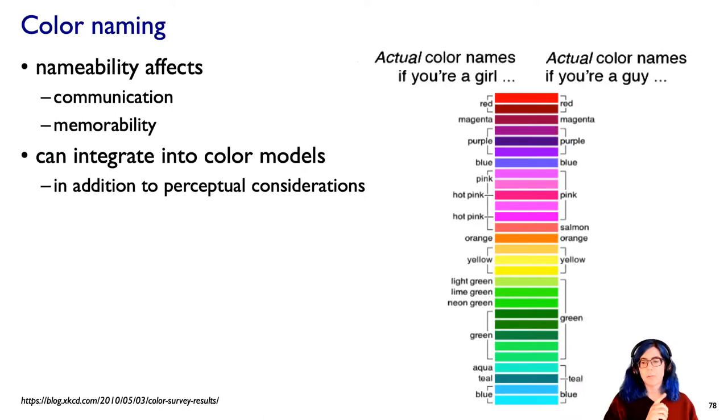And here's the part I want you to think about: nameability is actually important in visualization because it affects your ability to communicate about colors to somebody else in a visual representation and also the memorability of them. So there's been some recent color models that actually combine a quantifiable nameability metric as well as these perceptual metrics to get these combined ideas of what are good colors to use by both metrics of perception and nameability.